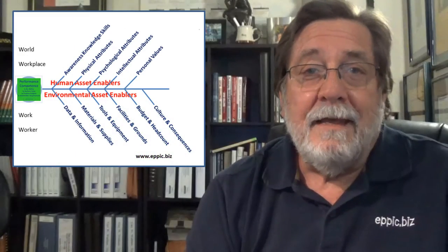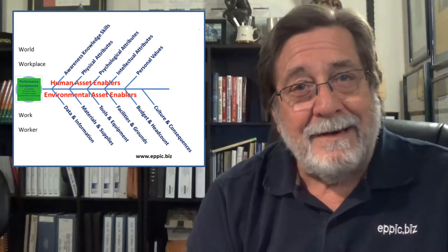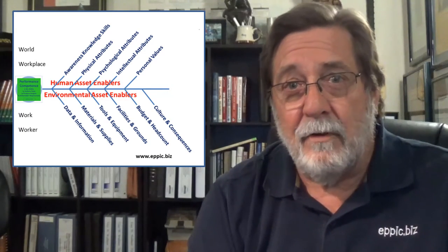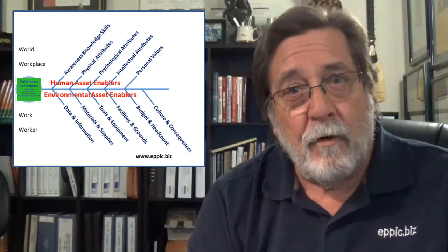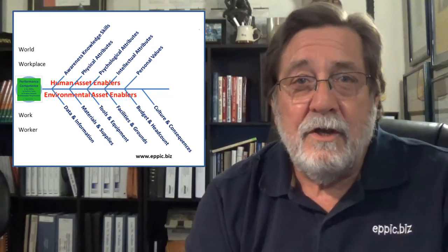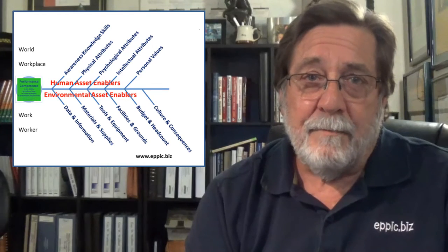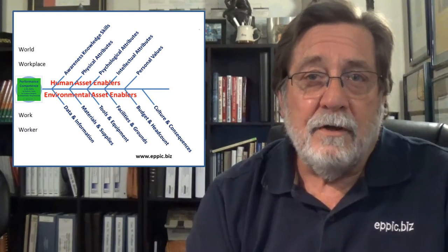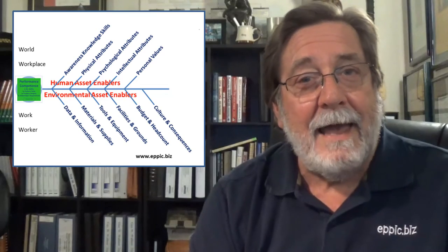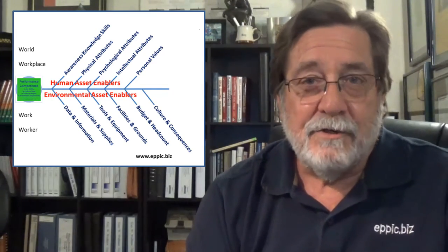The enablers of performance competence include both environmental assets that enable the performance and the process, and also human assets that enable the performance and the process. We'll take a closer look at each of these on the spines of my adaptation of the Ishikawa diagram in just a moment.